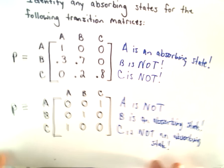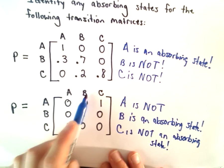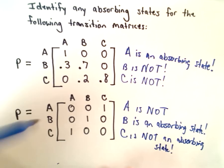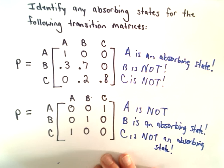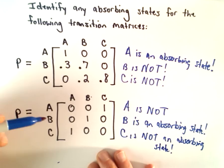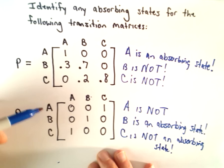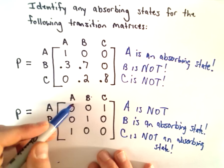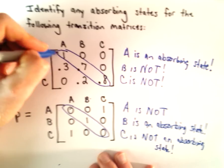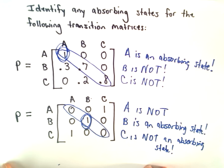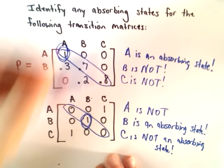So basically what you'd be looking for in a matrix — if states are labeled in the same order, ABC across rows and columns — you'd be looking for 1s along the diagonal. If there are any 1s along the diagonal, you would have absorbing states. But again, it depends on the labeling, so I want to stress that. We'll talk about a standard form to help avoid some confusion in a later video.